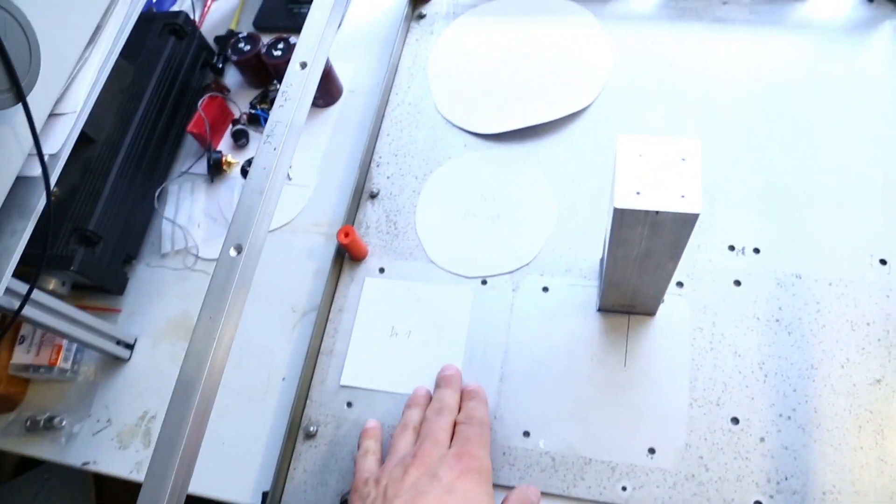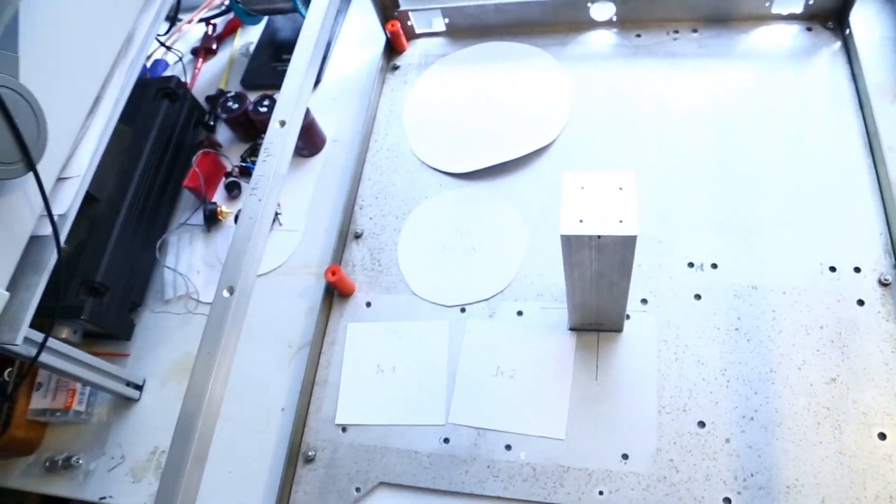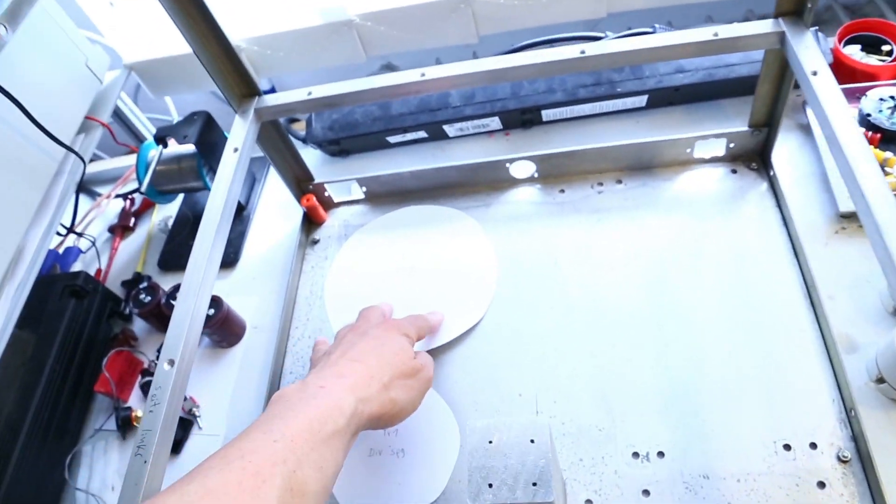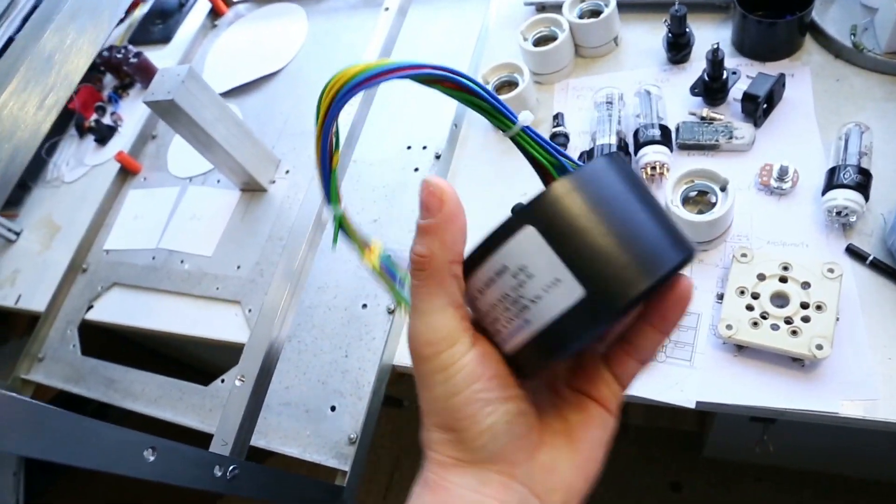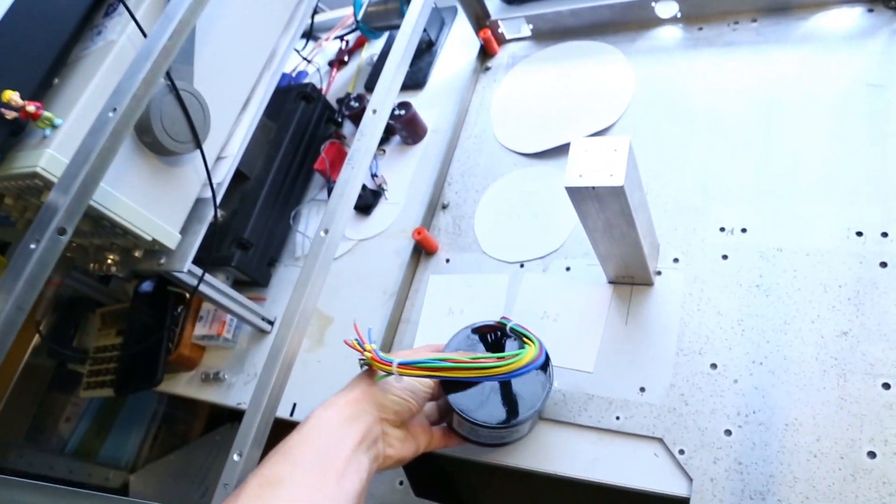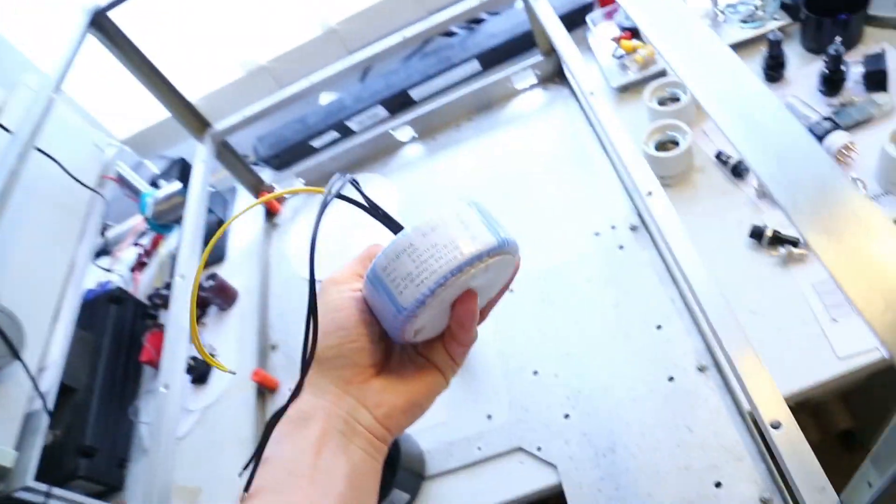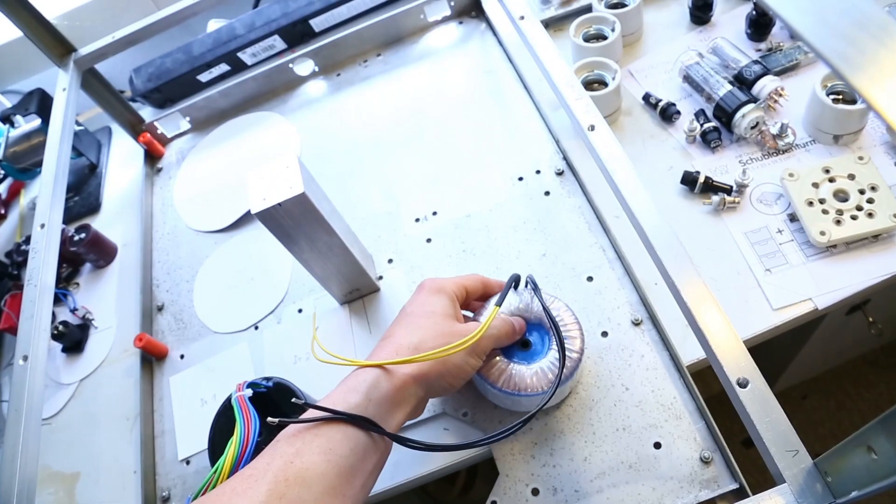Two chokes for the high voltage. The transformers are all custom types. Here is the heating transformer for the mercury vapor rectifiers. And here is the heating transformer for the power tubes. It will be here.